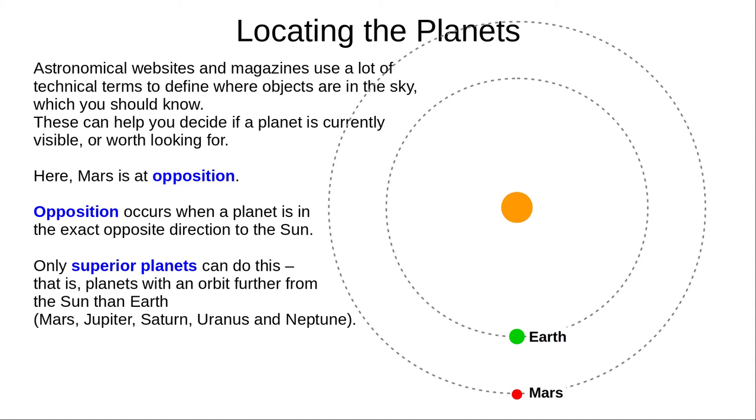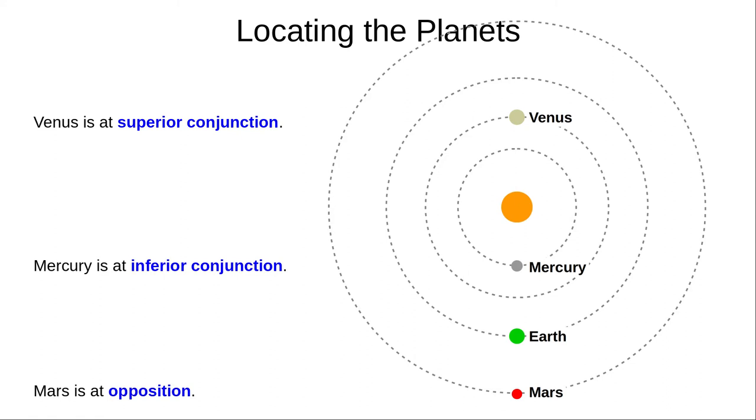Here, we see Mars at opposition. It's in the opposite direction compared with the Sun. This gives the best visibility for the planet, but only superior planets, with orbits more distant from the Sun than our own, can be at opposition. Here, we can see all three. You may wish to print a copy of this for your notes.